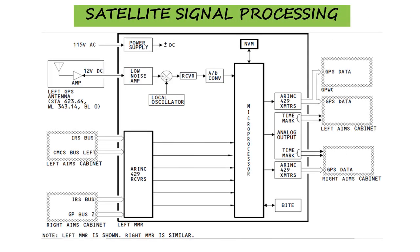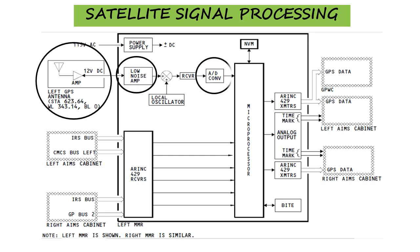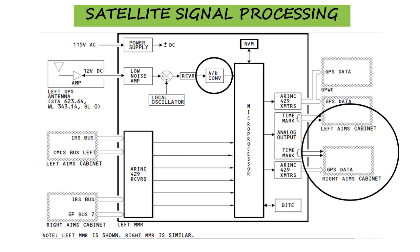Now let us understand how the satellite signals are processed. The low noise amplifier inside the multi-mode receiver receives and amplifies the satellite signals from the GPS antennas. The receiver detects the satellite signal and sends it to a digital-to-analog converter. The digital-to-analog converter sends the digitized signal to the microprocessors, which then calculate the airplane position and other GPS data. The GPS data goes to the flight management computing function in the left and right AIMS cabinet. The MMR makes time mark pulses once per second, and these time mark pulses go to the AIMS cabinet.